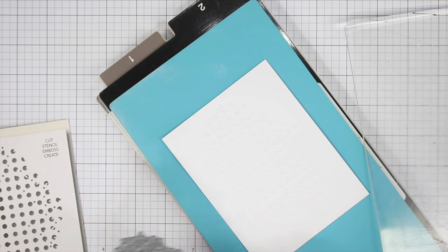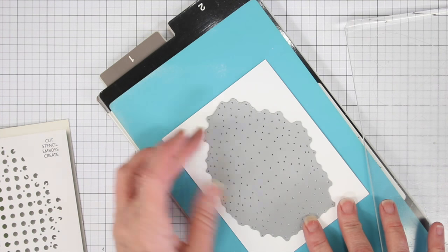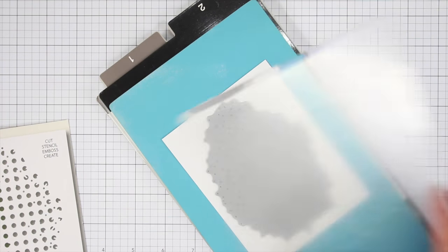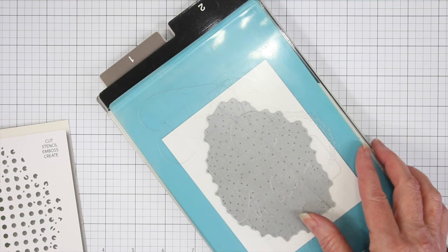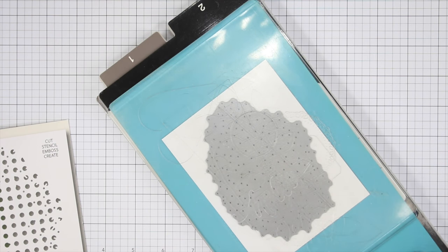So what you'll want to do is put your paper down, then put your die on your paper, and then put your cutting plate on top, and then you can run that through your die cut machine.